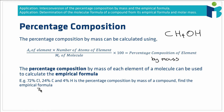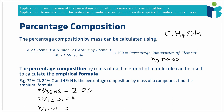So we divide 72 by the relative atomic mass of chlorine (35.45), 24 by the relative atomic mass of carbon (12.01), and 4 by the relative atomic mass of hydrogen (1.01). That gives us 2.03, 2.00, and 3.96. When we divide those percentages by the relative atomic masses we get numbers associated with chlorine, carbon, and hydrogen that follow the same ratio as these elements in the empirical formula.